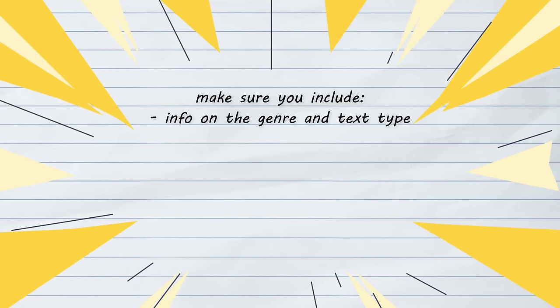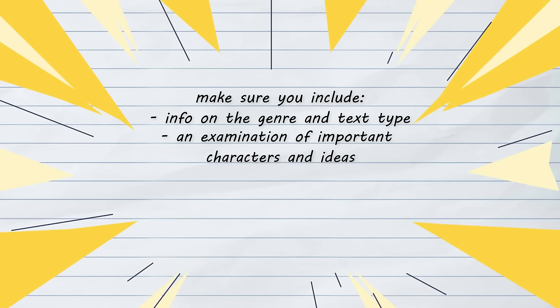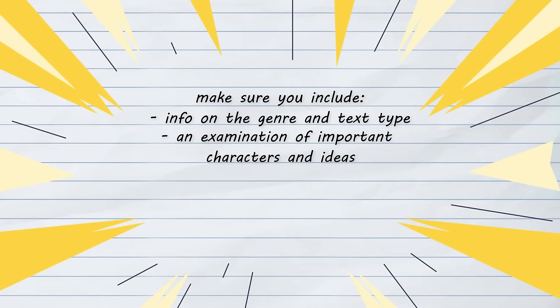At the beginning you'll want to at least mention the text type and genre that you're analysing — so for example, is it a play or a novel or a poem? Is it a sci-fi or a fantasy or a thriller? All of these have very specific conventions so make sure you talk about how the text plays into those or how it bends the rules. You'll need to examine the important characters and provide an outline of the important parts of the text. Make sure you include a review of the themes that you'll be discussing and the symbols that are used to represent these themes, and try to at least mention the text's overall structure as well.